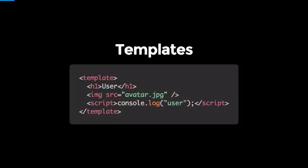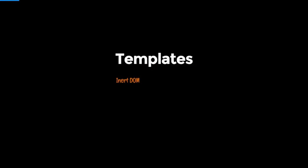First we've got templates. Templates has a new element called template. It's kind of like how we use script tags and do string templating, except this is an actual DOM node and we can query into it. It's inert DOM — the browser will parse it but it won't render it to the screen until we take the contents and inject it somewhere.